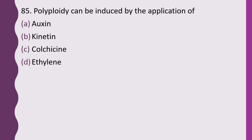Question 85. Polyploidy can be induced by application of: auxin, kinetin, colchicine, or ethylene. The correct answer is option C — colchicine can be used to induce polyploidy.